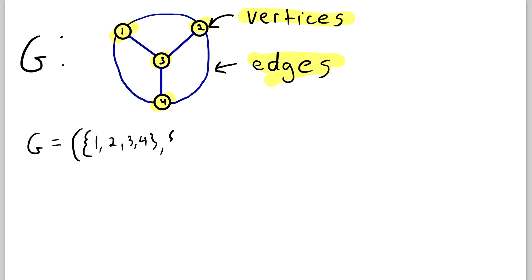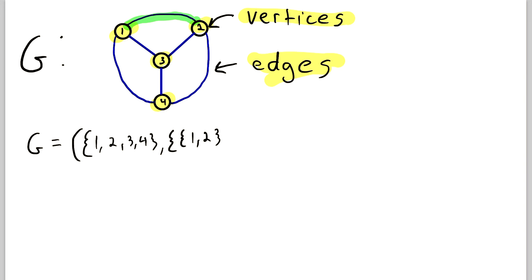Then comes the edge set. The edge set is comprised of two-element subsets of the vertex set. The two elements in each subset are vertices that are joined by an edge. Here we have an edge joining vertex one and two, so we write a set containing one and two. You could also write it as the set containing two, one — that doesn't matter because sets are not ordered. So two is joined with three, so we also write the edge two, three. Order of the vertices doesn't matter — all that matters is that they're joined by an edge.